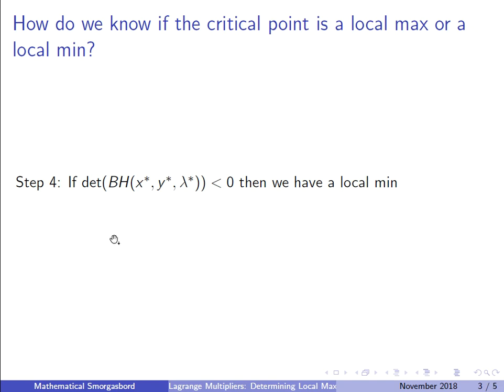And now the final step is you have to look at the determinant. So if the determinant is less than zero, then our point is a local minimum. If the determinant is greater than zero, then our point is a local maximum. So as you can see, this is very similar to the second derivative test. The only difference is that we actually flip the inequalities in the second derivative test.